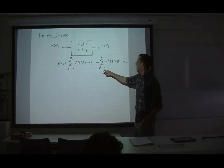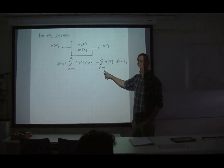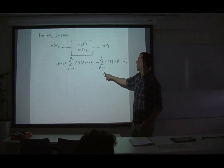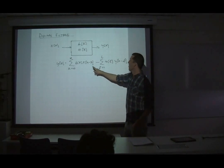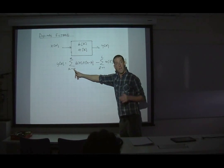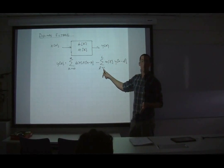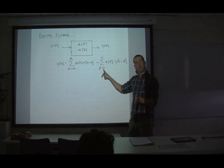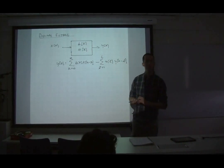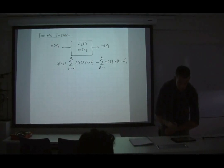An IIR filter feeds back into itself for all time — give it one input, take the input away, and it generates values forevermore. The output term sum starts from one rather than zero because we can't use the most recent output while we're trying to generate it. The input sum can start from zero — the most recent input. This is our difference equation.